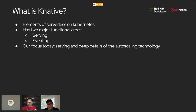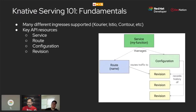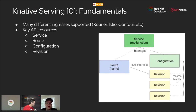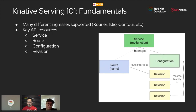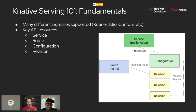A couple things to set the context. There are a number of different ingresses supported in Knative — for example, Courier, which was created by our three-scale team here at Red Hat, Istio, Contour, etc. The fundamental thing to understand is that the ingress implementation you bring to provide your ingress in Knative is pluggable.